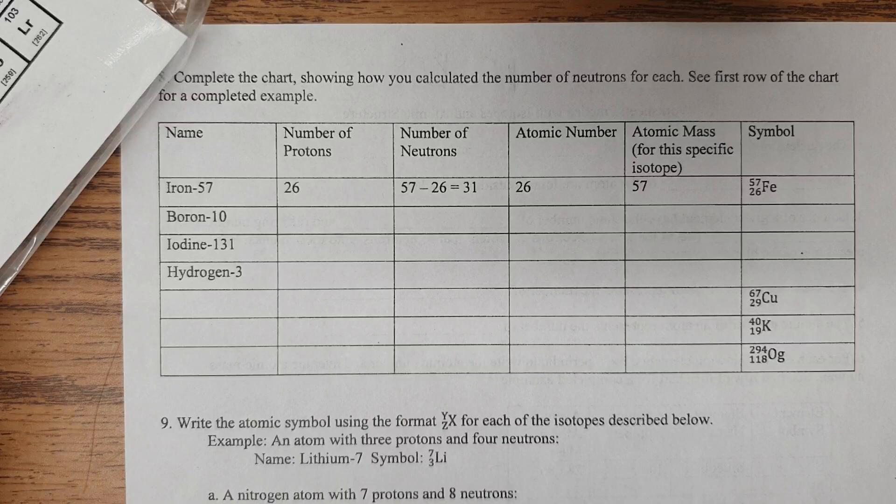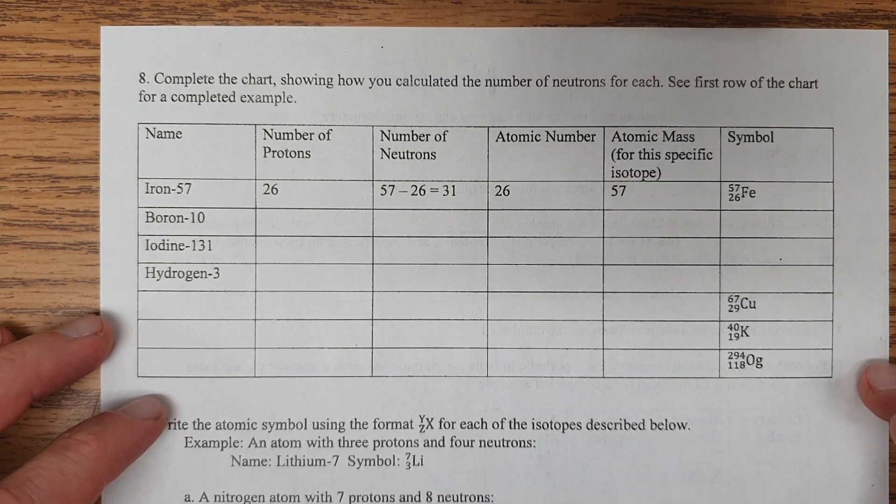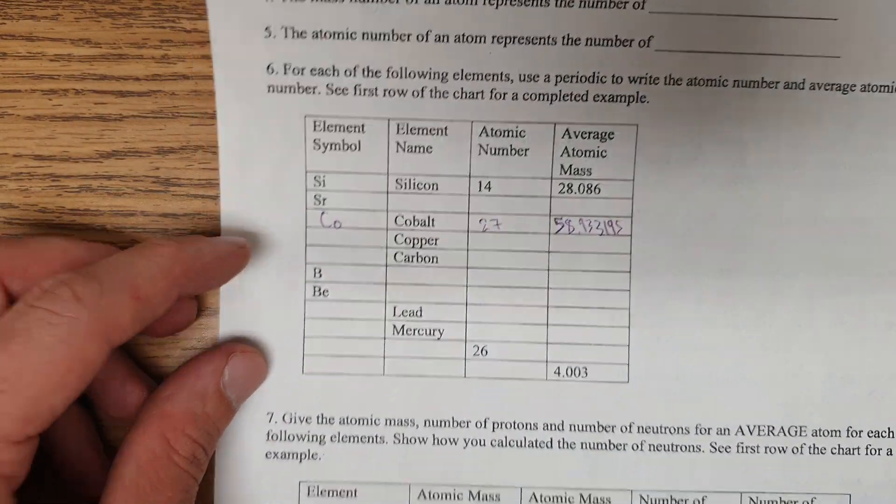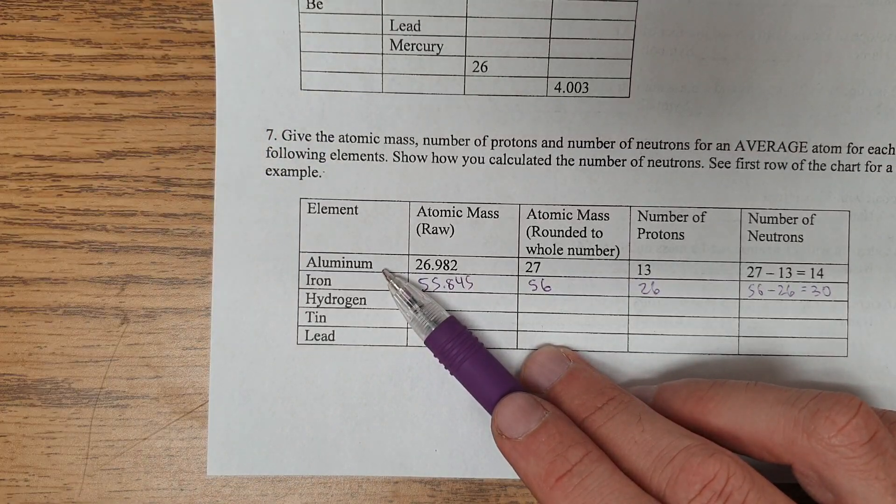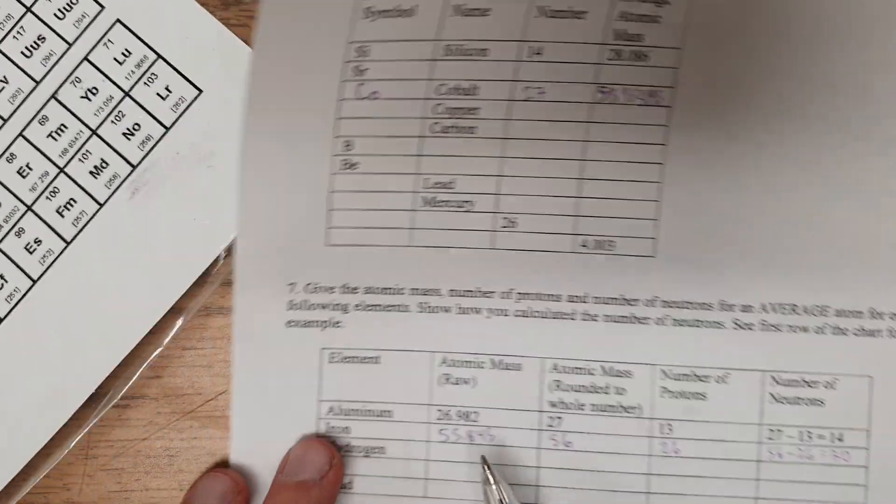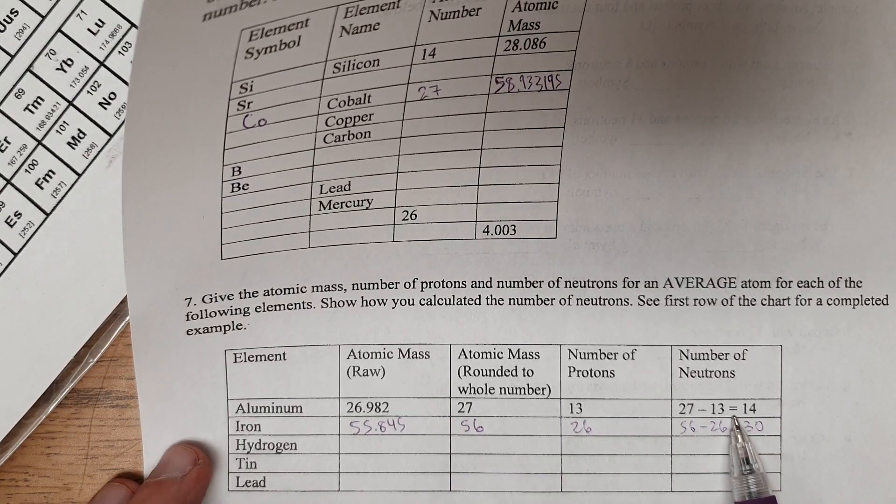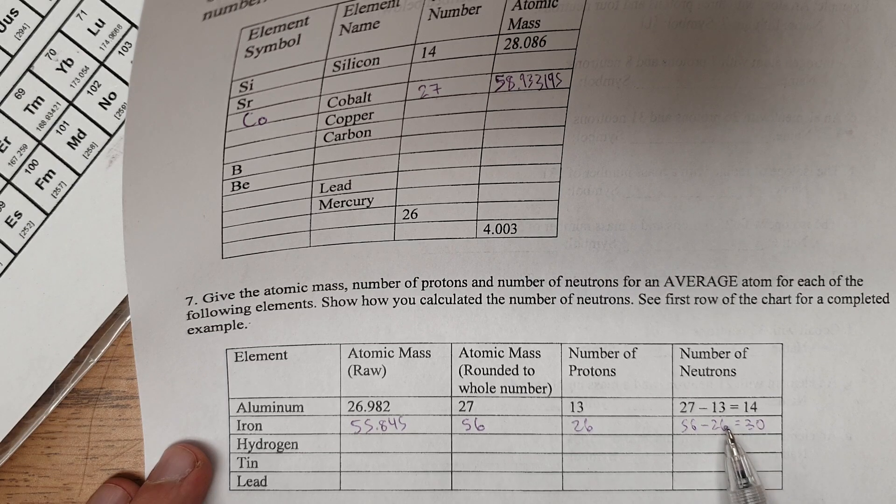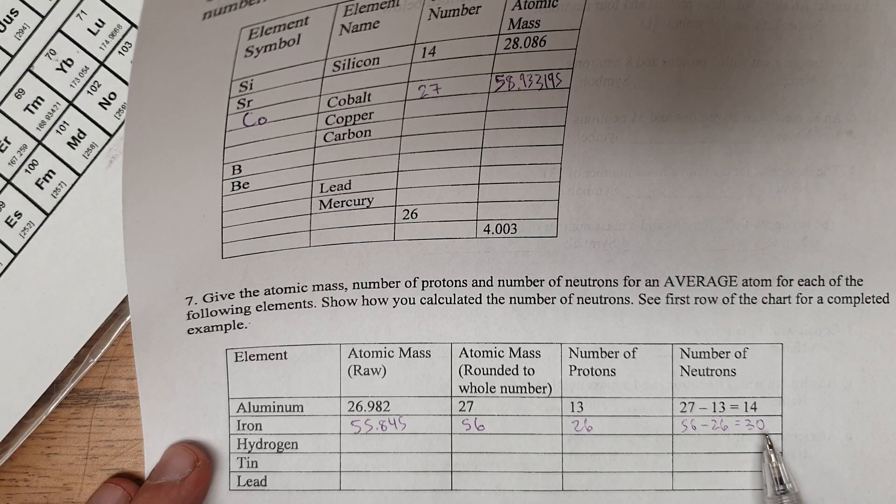So, let's move on to the back. Complete the chart showing how you calculate the neutrons for each. So this is one where, different from here, where if we don't tell you which isotope, you just use the average that's on the chart for whatever element it is. And then you round, and then you go from there. So basically, this is the number of neutrons in the average iron isotope. This is something that can vary from different isotopes of iron. This is just the most common one, the average one.